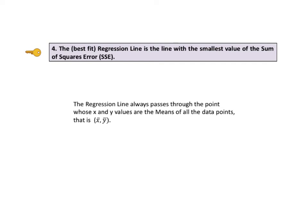The regression line always passes through the point whose x and y values are the means of all the data points. That is, through the point x̄, ȳ.